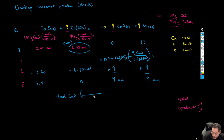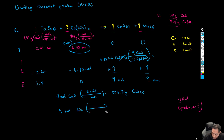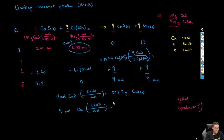For nine moles of CaO: the molar mass is 40.08 (Ca) plus 16 (O) equals 56.08 g/mol, so nine times 56.08 gives 504.7 grams of CaO. For nine moles of SO₂: the molar mass is 32.07 (S) plus 32 (2×O) equals 64.07 g/mol, so nine times 64.07 gives 576.6 grams of SO₂.